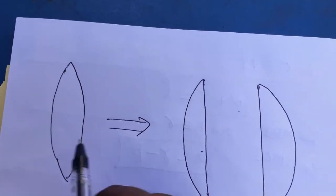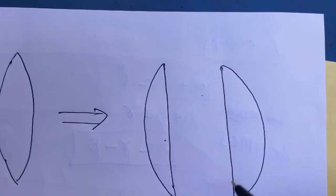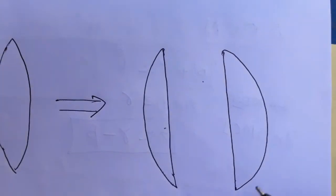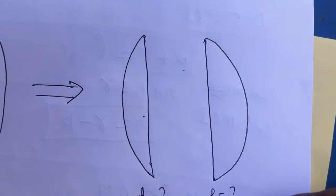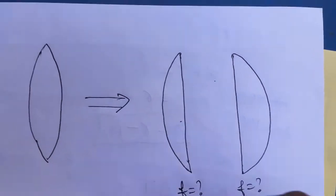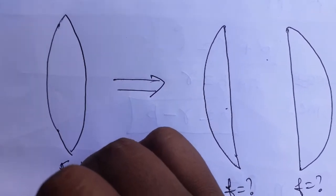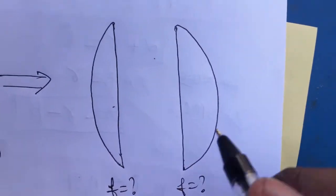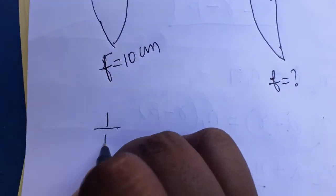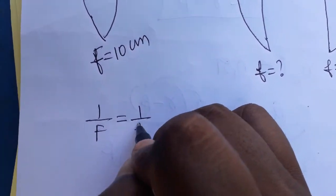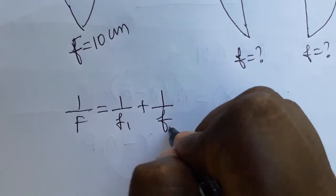Today we are going to learn about one full biconvex lens — if we made it as two plano-convex lenses, what is the individual lens focal length? We take the combined focal length as 10 centimeters. When we put them together: 1/F = 1/f1 + 1/f2, so the addition of both lenses gives us the total focal length.